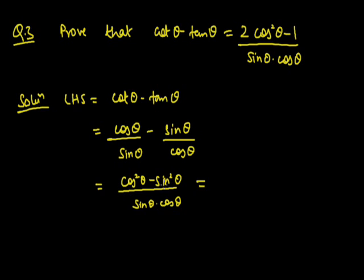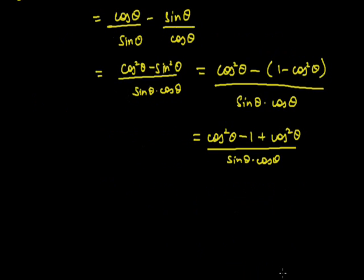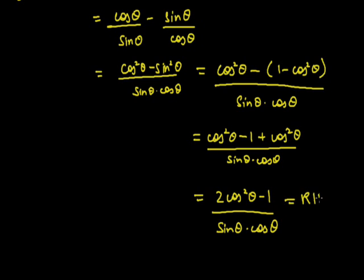Since the RHS numerator requires cos²θ, we convert sin²θ using the identity sin²θ + cos²θ = 1, so sin²θ = 1 - cos²θ. Substituting: cos²θ - (1 - cos²θ) = 2cos²θ - 1. Therefore LHS = (2cos²θ - 1) / (sinθ · cosθ) = RHS. Hence proved.